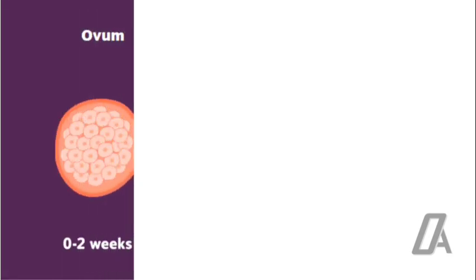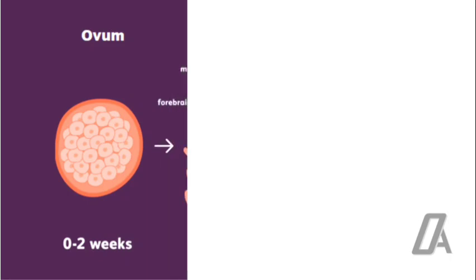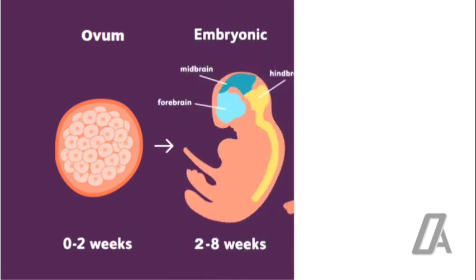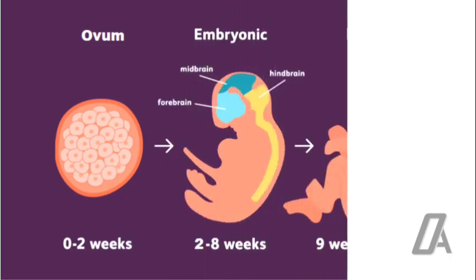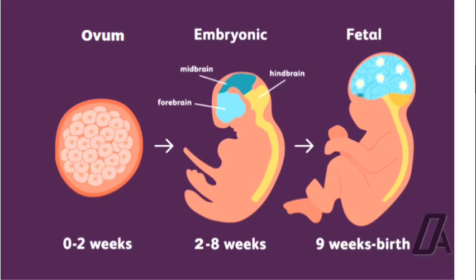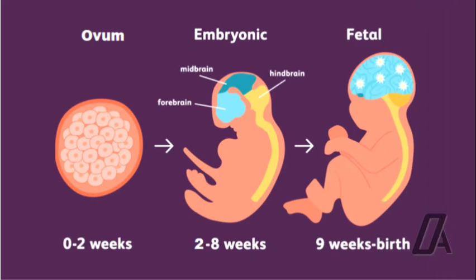The prenatal craniofacial growth develops in three stages: the period of the ovum, for the first two weeks from fertilization; the period of the embryo, from the second to eighth week; and the period of the fetus, from the ninth week till birth.